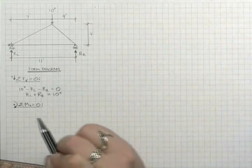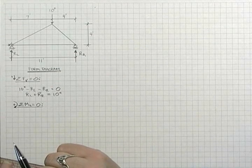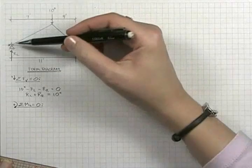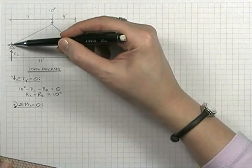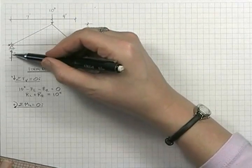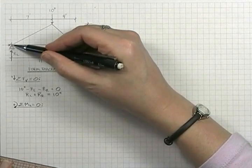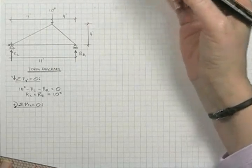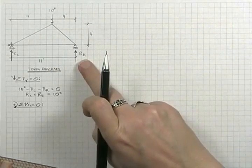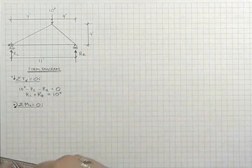What we do want to do, though, is select a moment sum center that will eliminate one of the unknowns. By summing moments about the left-hand side, the moment arm for the reaction on the left-hand side passes through the moment center, therefore the moment about that point is zero, leaving us with one unknown, and we can solve that equation.